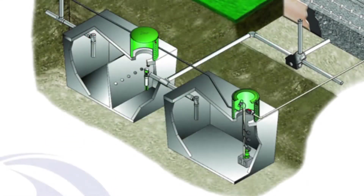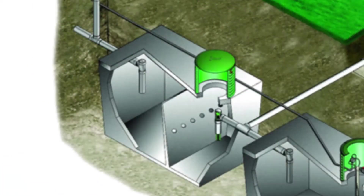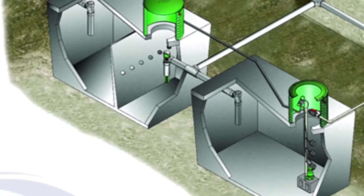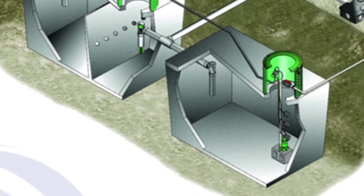We have the primary tank there — it's a two-compartment tank. As the sewage comes in, the clear zone is where the baffle is, and it would spill over into that second compartment. From there we go through an effluent filter.